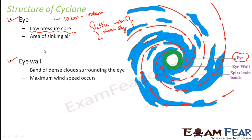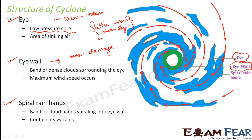The next structure is the eye wall — the wall that surrounds the eye, shown here as the green-colored structure. It is a band of dense clouds surrounding the eye. Maximum wind speed occurs here, and since high wind speed is accompanied by low air pressure, a low pressure area is created at the core. The most violent winds and the heaviest rainfall both occur here, making the eye wall the most dangerous part of the cyclone, causing maximum damage.